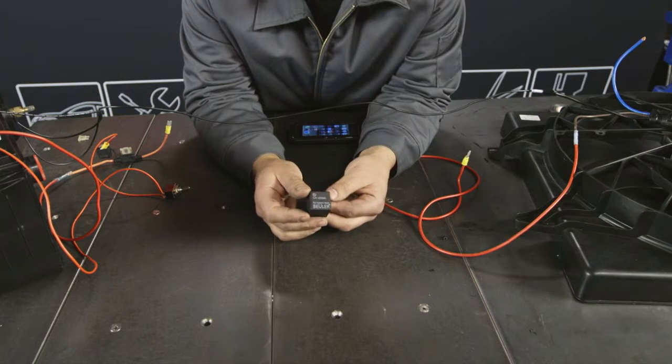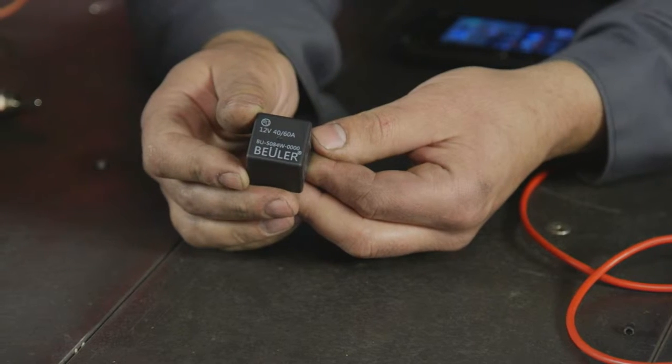Let's start with a basic relay and how it works. A relay is basically a small electromagnet that activates a switch once it is energized.